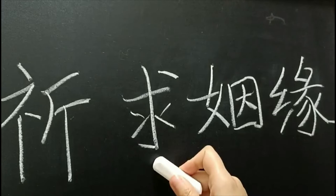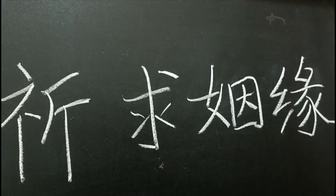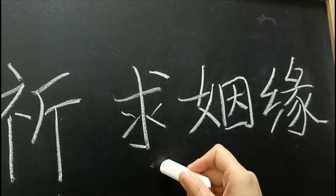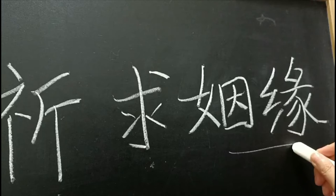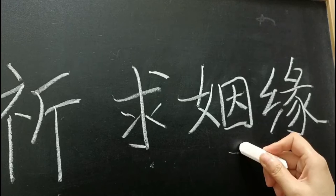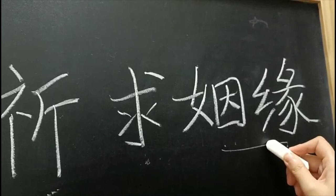Qi and qiu are pronounced and written differently but mean the same — they mean to beg, to ask for, or to pray. Chinese characters are sometimes combined this way. Similarly, yin and yuan are pronounced and written differently but mean the same. Yuan means a predestined relationship, and yin means the predestined most intimate relationship — marriage. So Qi qiu yin yuan simply means praying for marriage.